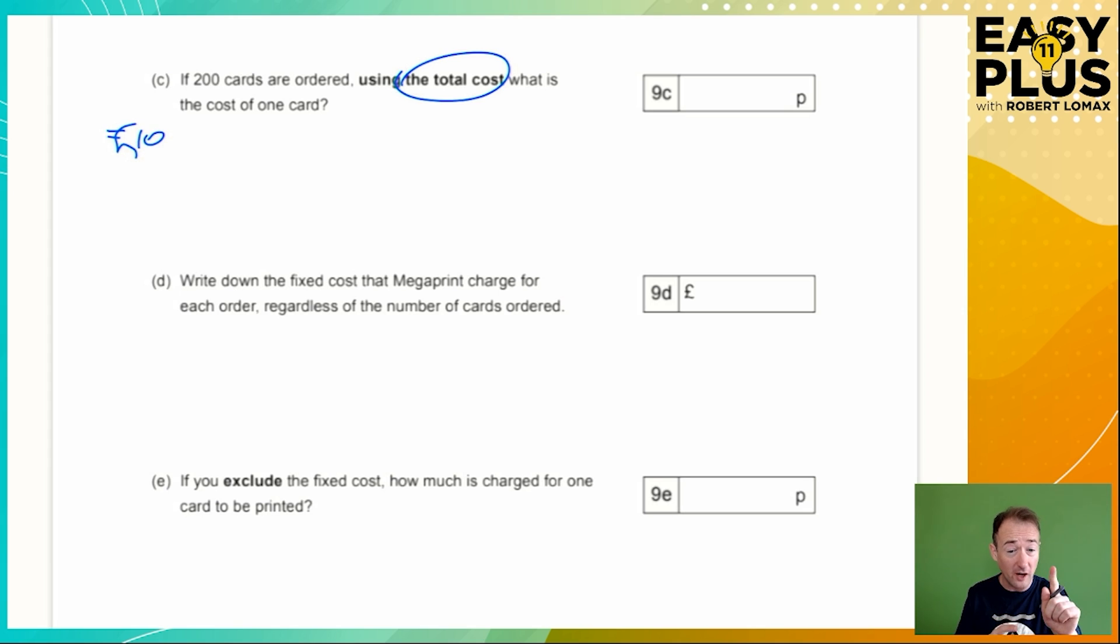So the total cost of 200 cards is £10. To find the cost of one card, we need to divide that by the number of cards, which is 200. So it's 10 divided by 200. But if you look at the answer space, you can see they want an answer in pence, so it might be easier to work in pence. £10 is 1000 pence, so we've got 1000 divided by 200. We can cancel zeros and we're left with 10 divided by 2 equals 5. So the cost of one card in an order of 200, the average cost, is 5 pence.